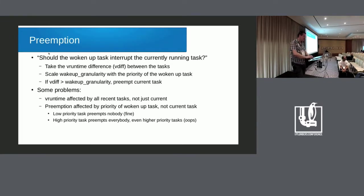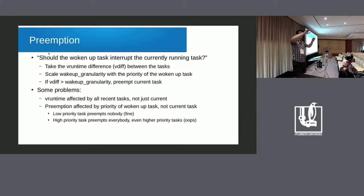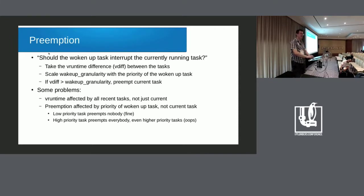Another issue is that preemption is really only affected by the priority of the task that is waking up, and not by the priority of the task that is currently running. So if a task at a deep nice level is running, then a nice minus 20 task pops up and starts running, and then a nice level 0 task that went to sleep wakes up — it can take the CPU away from that nice minus 20 task, because the priority of the currently running task is not considered in the preemption code at all.